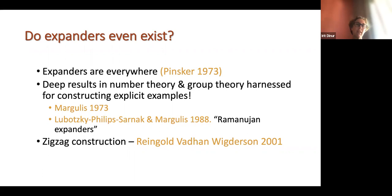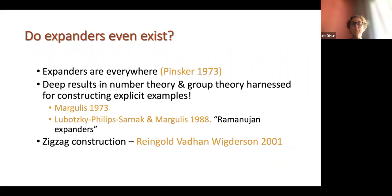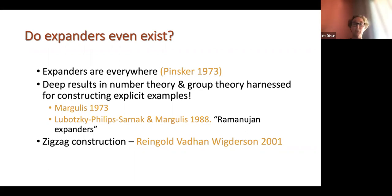It's not obvious that a graph where every node connects to only a few neighbors can be so highly connected — but a random graph is a very good expander. Later, deep results in number theory and group theory were used to give explicit constructions. There was the construction of Margulis, then the construction by Lubotzky, Phillips, and Sarnak (LPS), giving optimal graphs called Ramanujan expanders with the best possible spectral gap. Then in 2001, Reingold, Vadhan, and Wigderson gave a completely elementary construction — the zigzag construction.